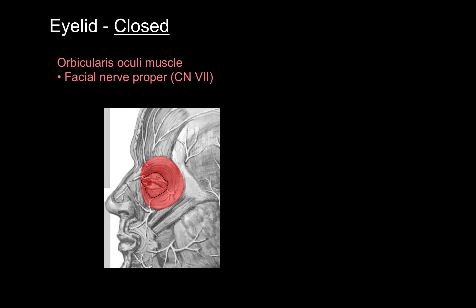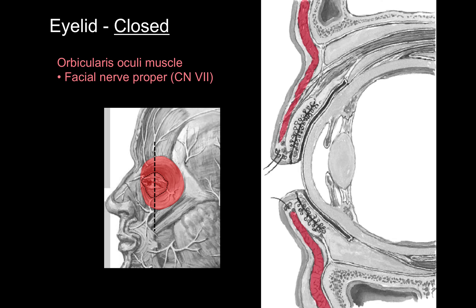There is a dotted line that shows the palpebral portion, the portion surrounding your eyelid, and then we're going to take a sagittal section through that area. Here we have a sagittal section through the eyelids, and you can see the top and the bottom of the orbicularis oculi muscles.